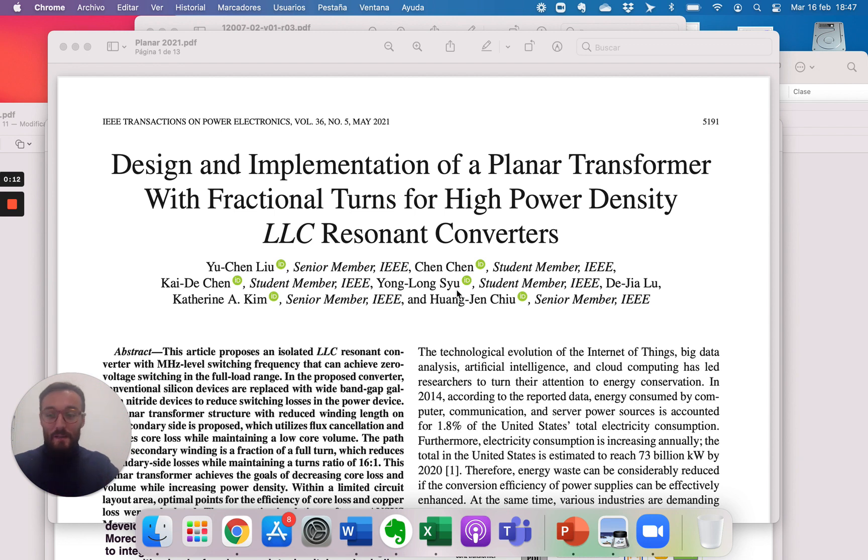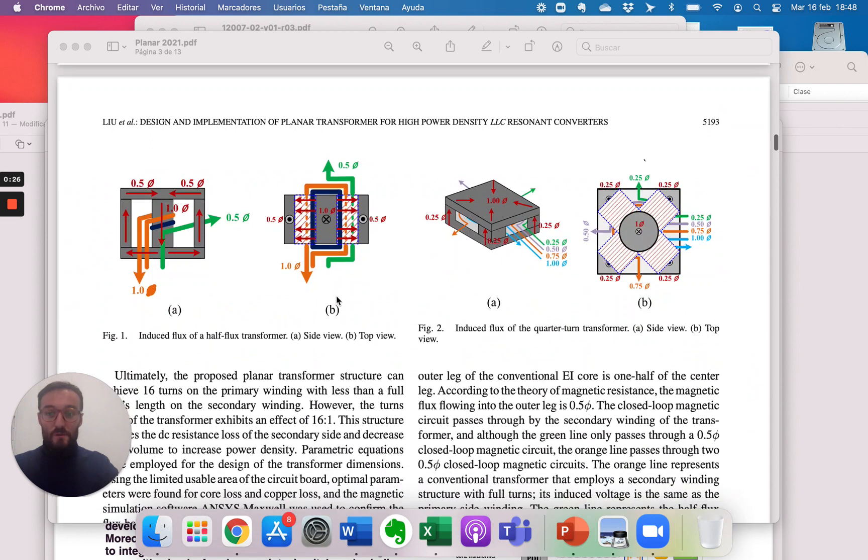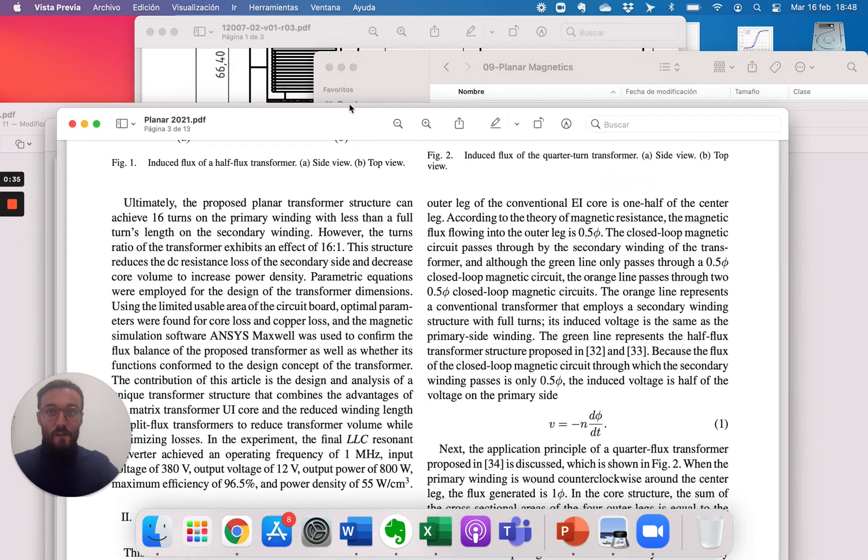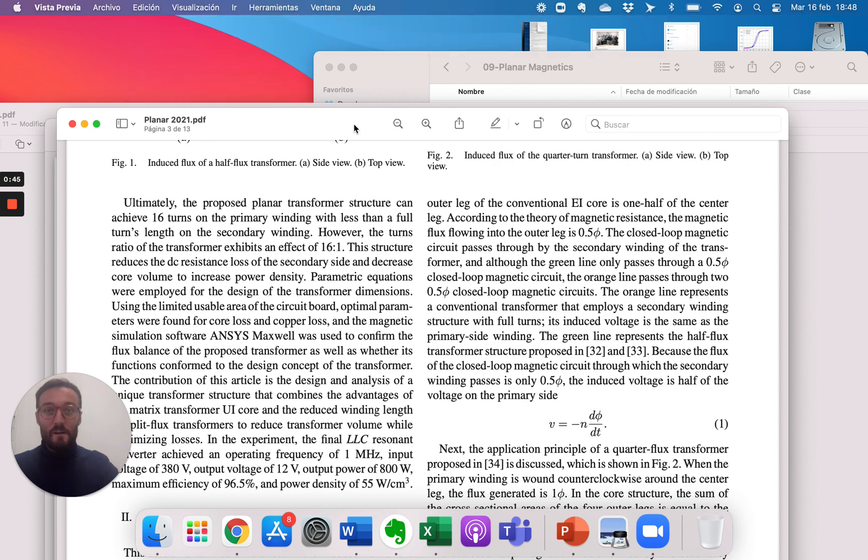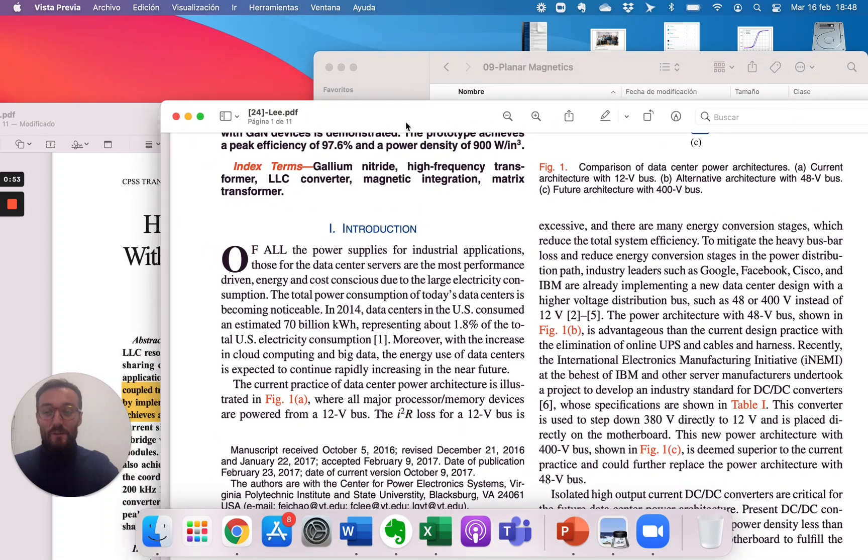Following the publications about planar transformers, last week we were talking about the half-turns of this article in the transaction that was explaining how to use half-turns and still get the same turn ratio. This week we are going to follow the same idea of planar magnetics. Actually, the initial idea comes from the matrix transformer from Fred Lee in this article here, but we are moving to China.